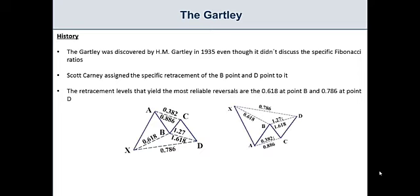Now let's see some actual drawings so you can better understand what we're talking about. The B point, which is this one, has to retrace 61.8 of the XA leg for us to start to get a valid Gartley.